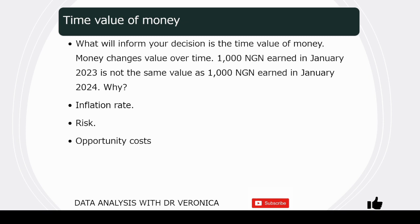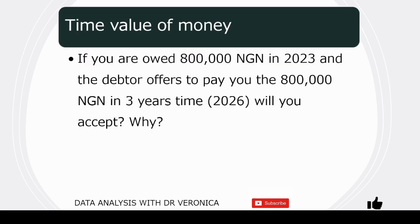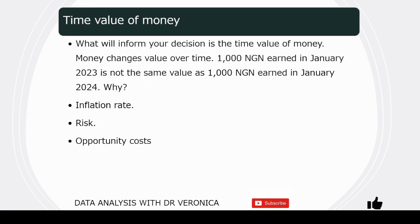The next factor is risk. In the second example — somebody owing you 800,000 Naira in 2023 and offering to pay you in three years time — there is a risk factor. The risk is: what if the person is not even able to raise that amount of money in 2026 because things got really bad? So, there is a risk factor that comes with uncertainty. The next factor is opportunity costs.